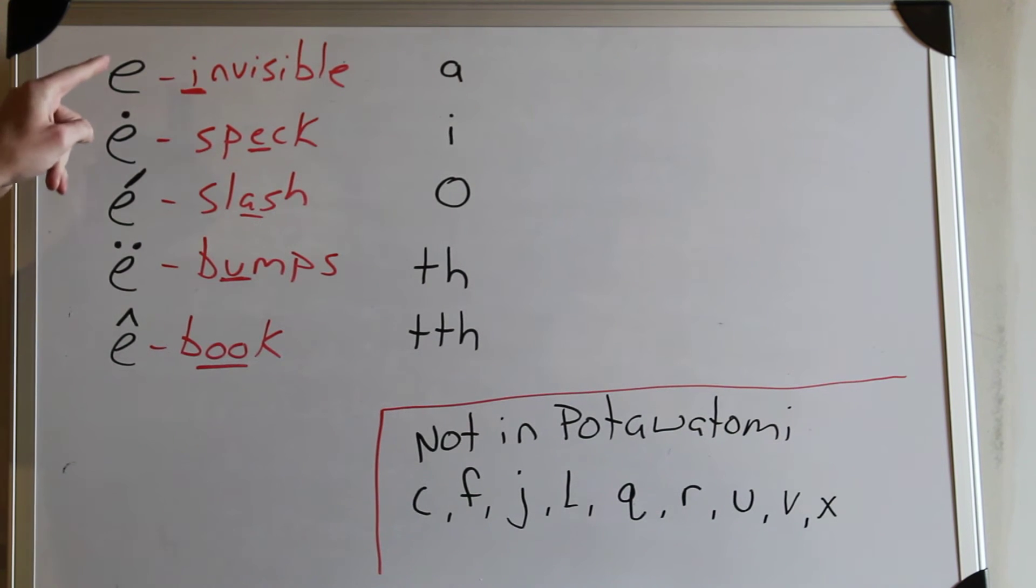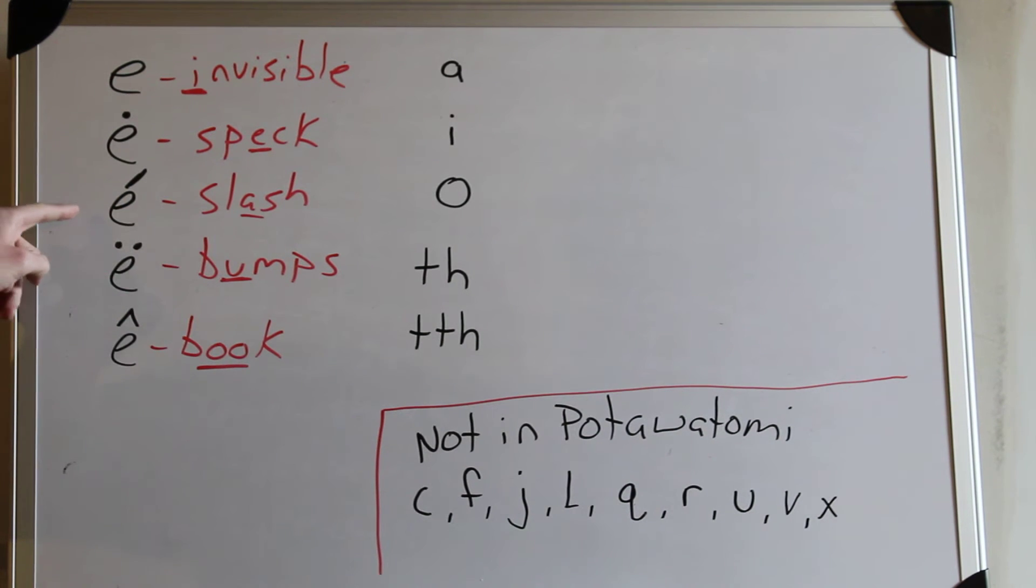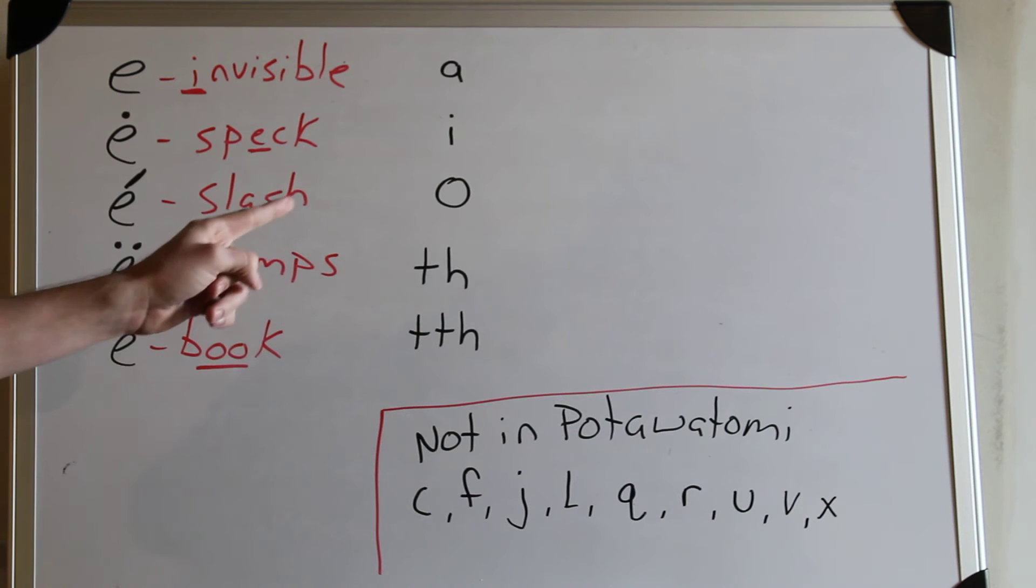So we have i as in visible, we have eh as in speck, we have ah as in slash, we have uh as in bumps, and we have uh as in book. Those are our E sounds.